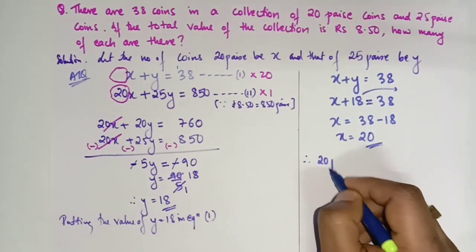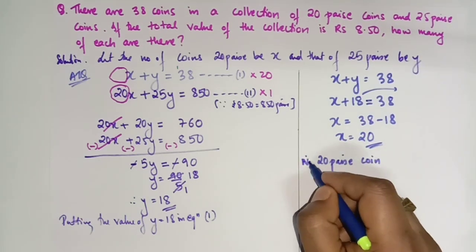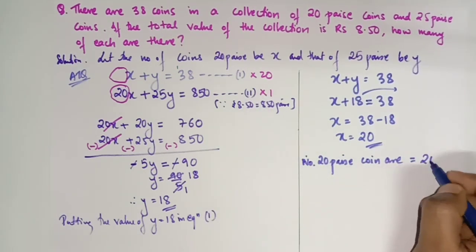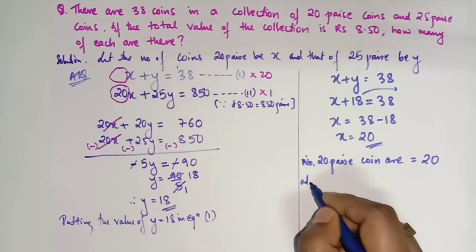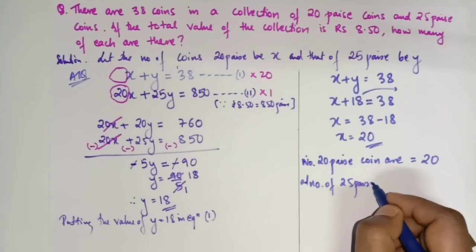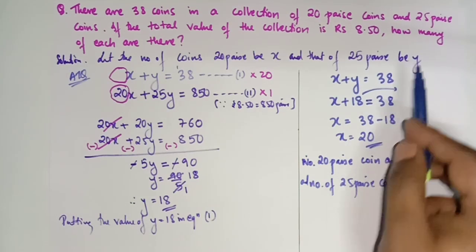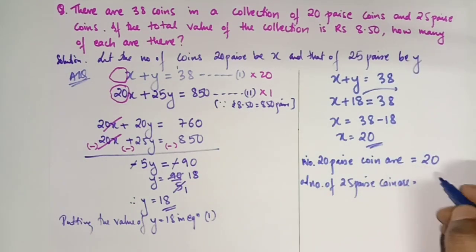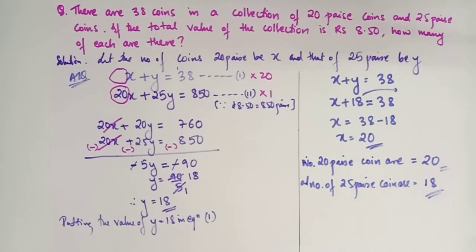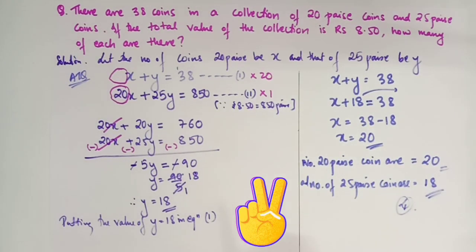Therefore the number of 20 paise coins is x = 20, and the number of 25 paise coins is y = 18. You can verify: x + y = 20 + 18 = 38, which matches the right hand side. So that's the correct answer. This is one of the very important questions and it carries 4 marks.